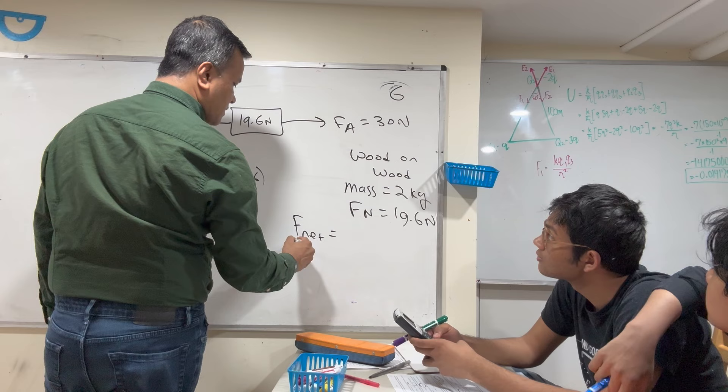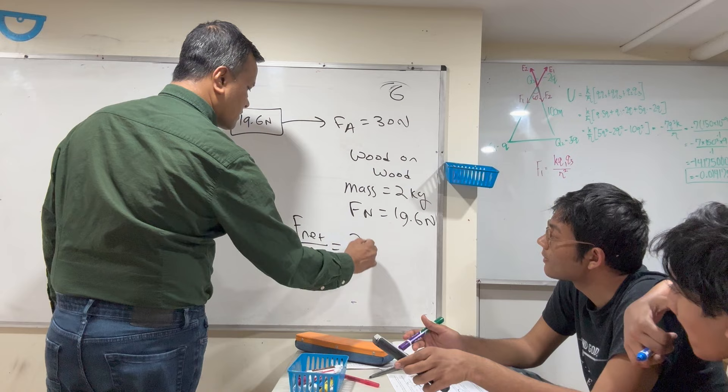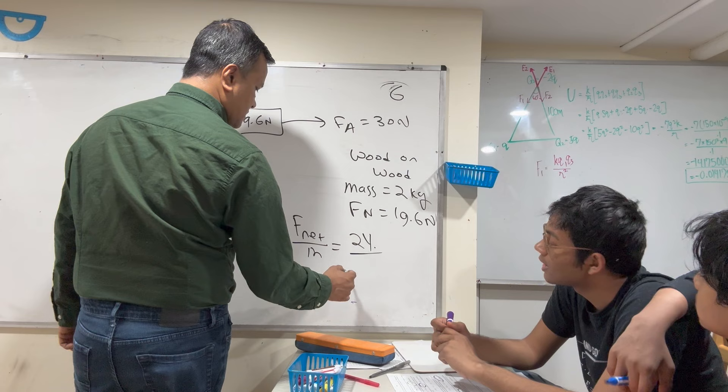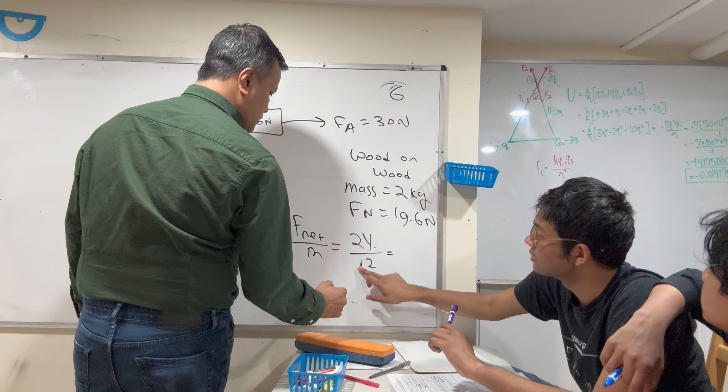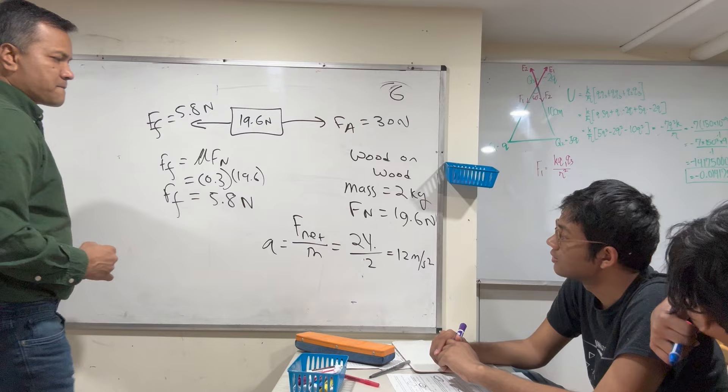Net force = F_applied + F_friction (accounting for direction). Net force over mass gives acceleration: 24 ÷ 2 = 12 meters per second squared.